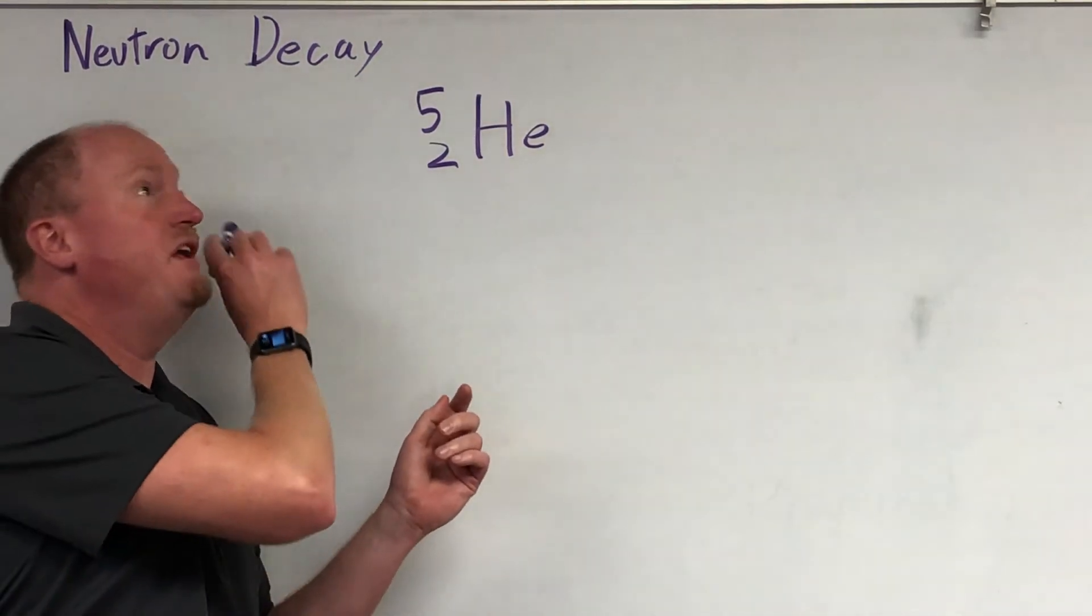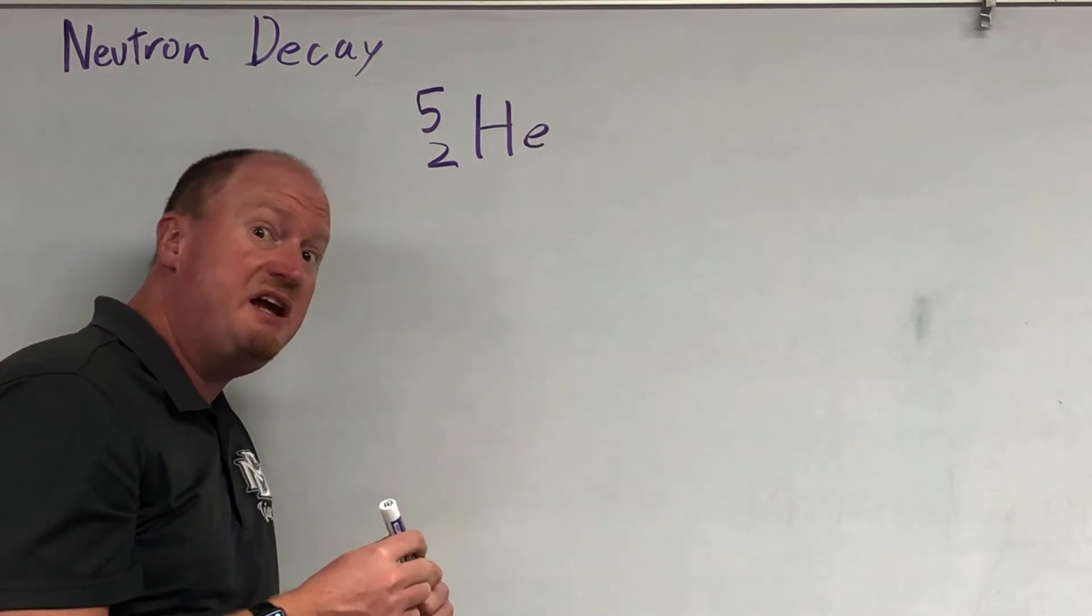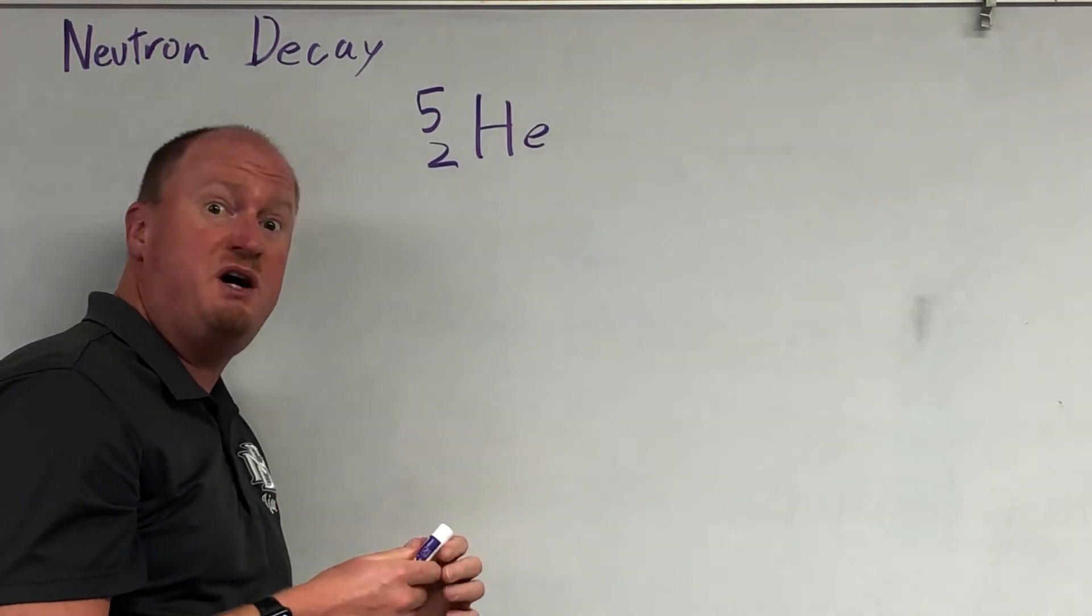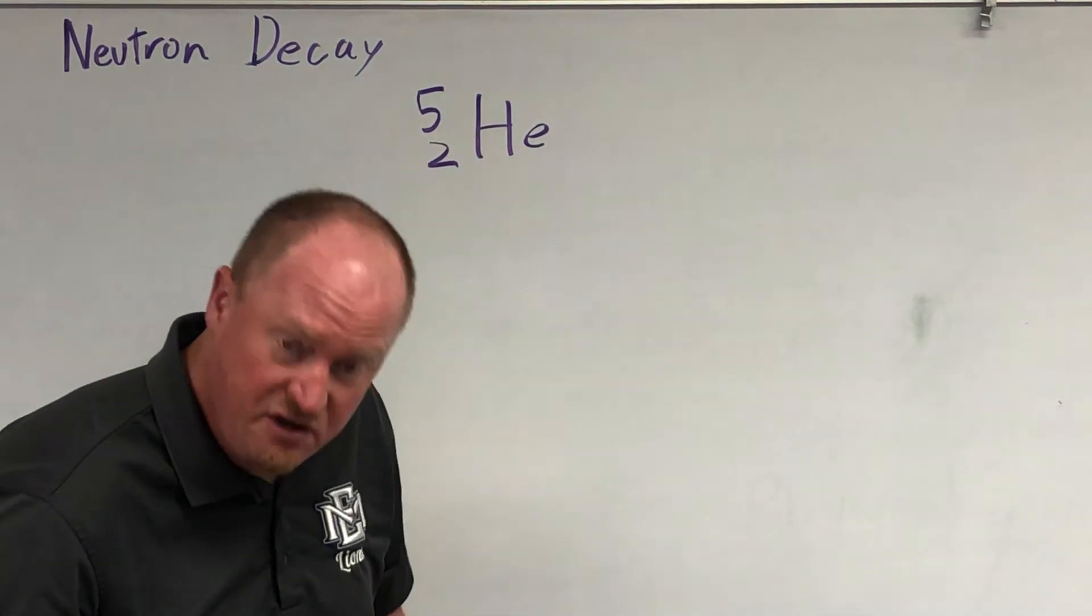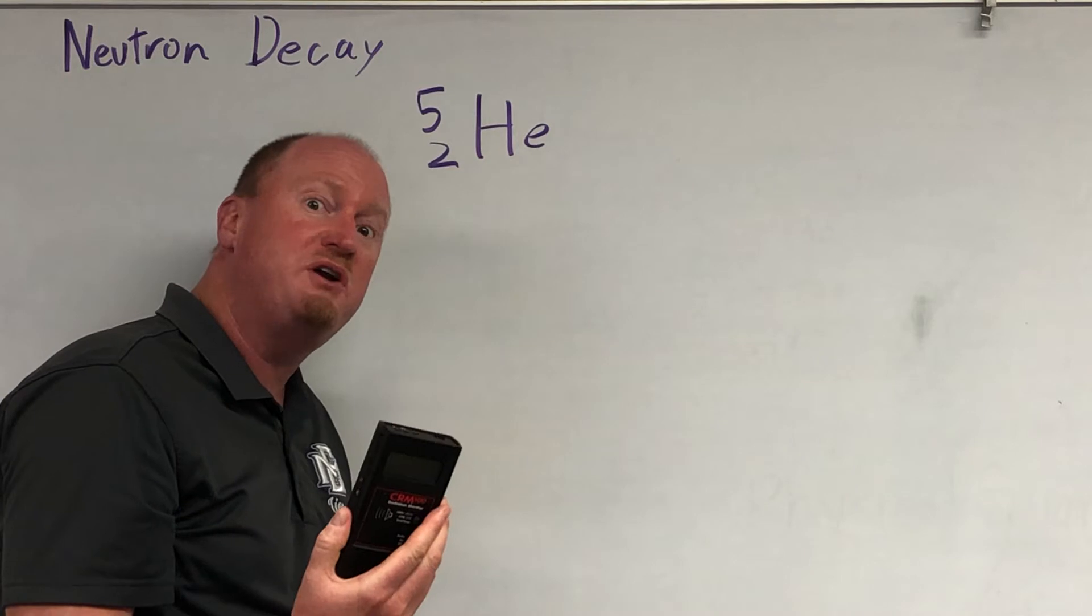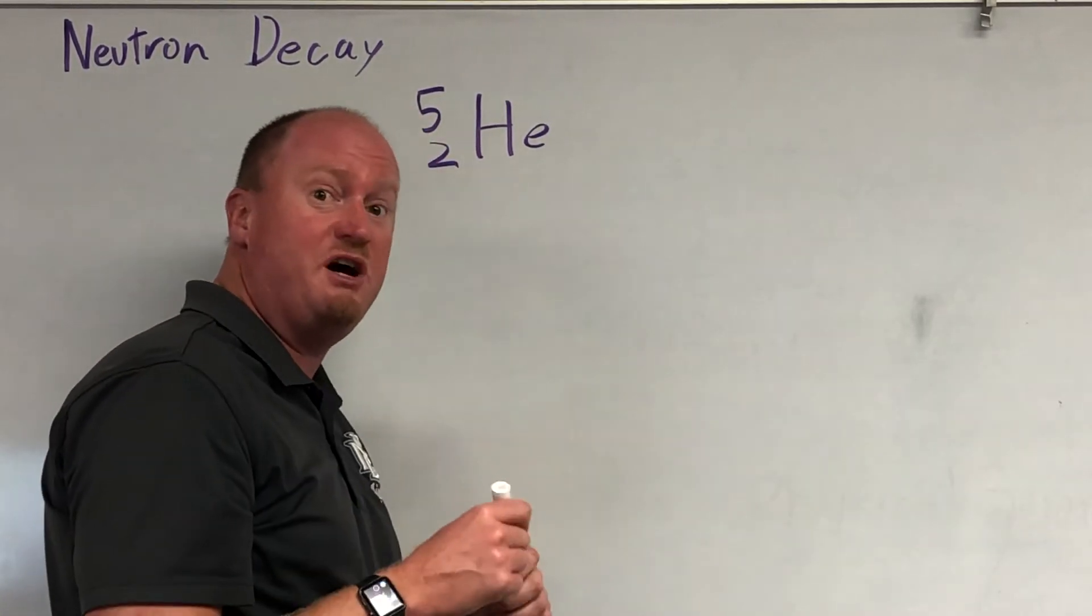Okay, so what's going on with neutron decay? Now, neutron decay is one that's not easy to show in a lab because neutrons are not ionizing radiation, which means your average Geiger counter is probably not going to pick it up. But it is still a very important type of radiation, and we'll talk about it.